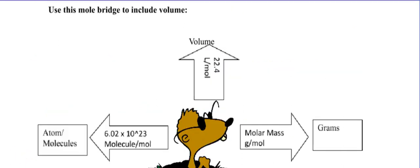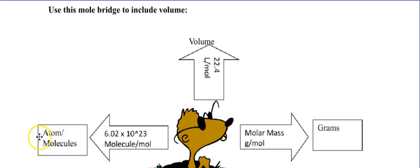Notice what this mole bridge does — it includes volume. If I want to go from atoms to volume, go through the mole. The number we use for volume is 22.4. If I want to go from volume to grams, I've got to go through the mole bridge. Atoms to molar mass? Go through the mole bridge. So: 6.02 times 10²³ equals 1 mole, molar mass equals 1 mole, and 22.4 equals 1 mole. That's what the mole bridge does.